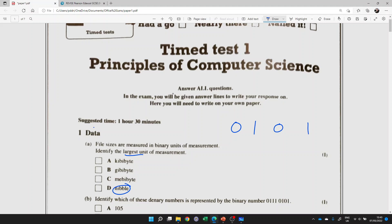If we have 1024 bytes, we will have a kibibite, so that's the next largest. 1024 kibibites makes a mebibite. 1024 mebibites makes a gibibite. And then 1024 gibibites makes a tebibite.